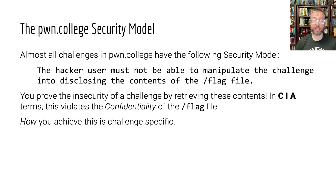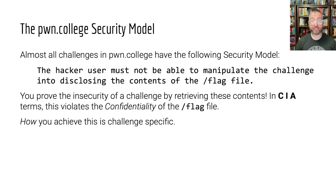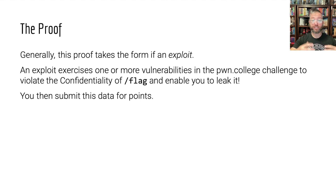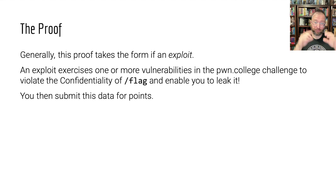In order to prove that a challenge is insecure — which is your job in almost every challenge; some challenges want you to write something or pull off a specific command — but for all the real security challenges on the platform, all you have to do is read the contents of the flag file. How you achieve this is challenge-specific. Different challenges have different vulnerabilities, and you use those vulnerabilities step by step to get the contents of the flag. That's your proof. Your proof is an exploit — an exploit that you write and carry out to violate the security of the challenge, get the flag, submit it into the submission form, and get the points.